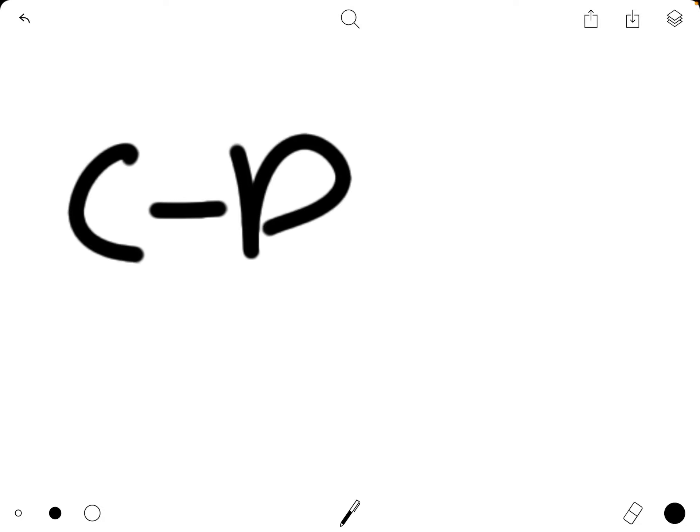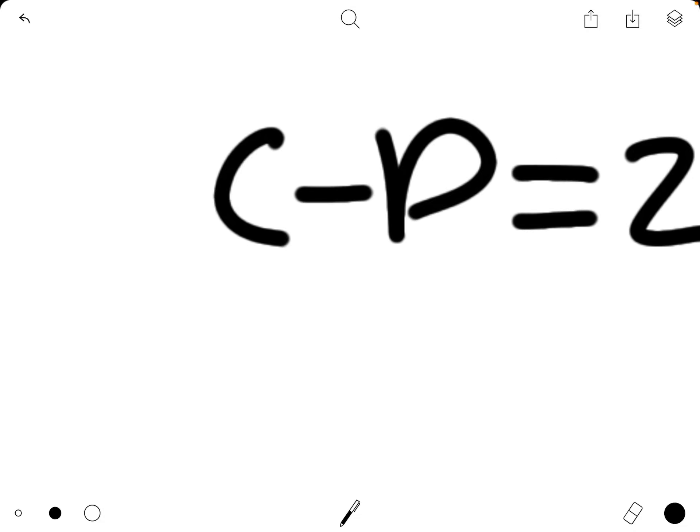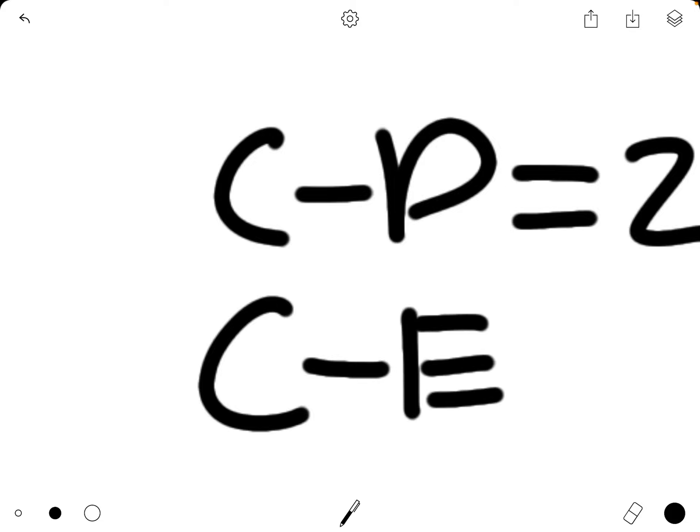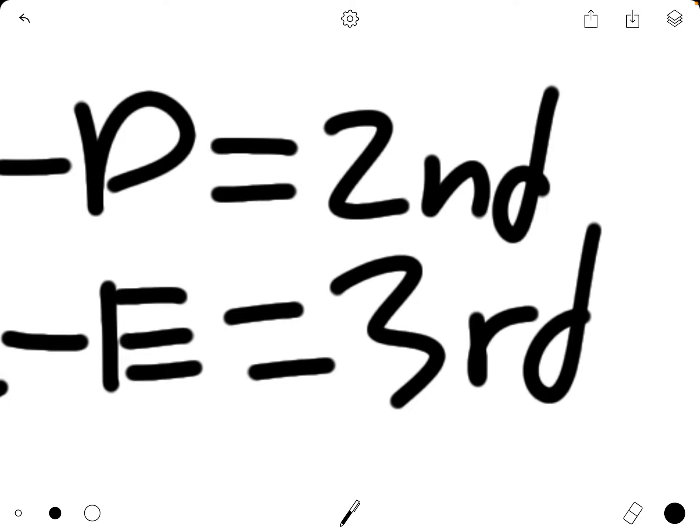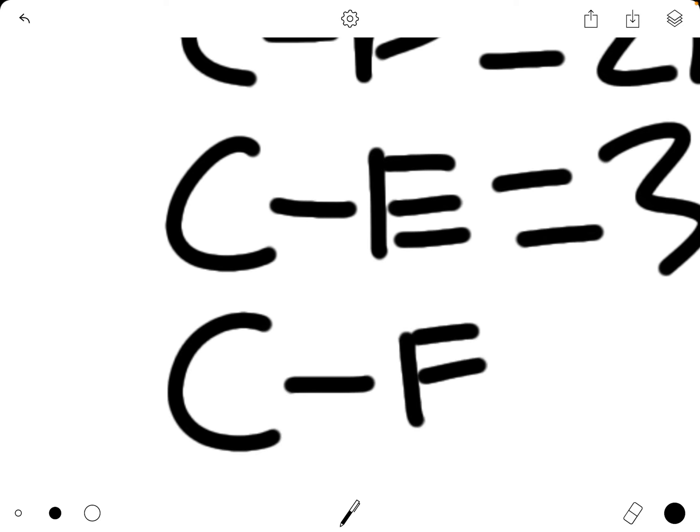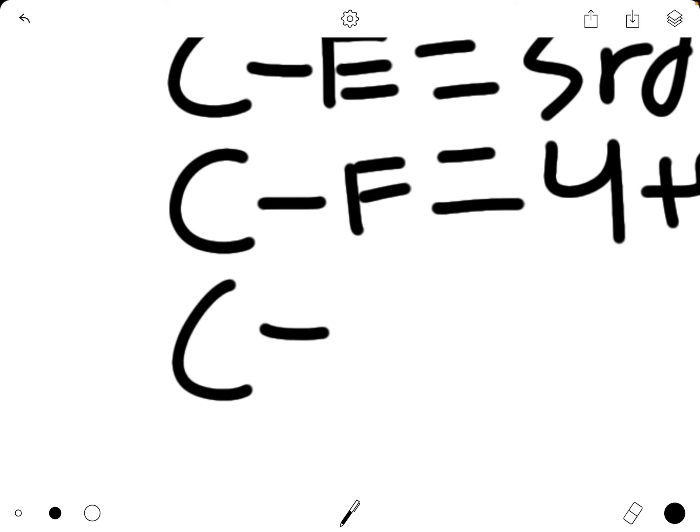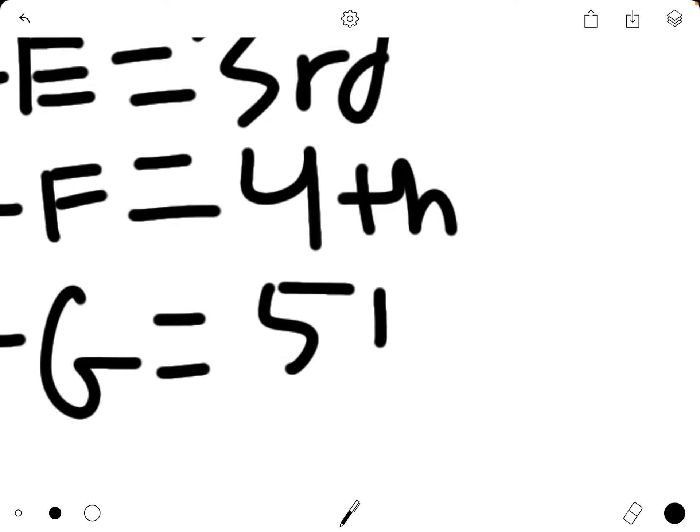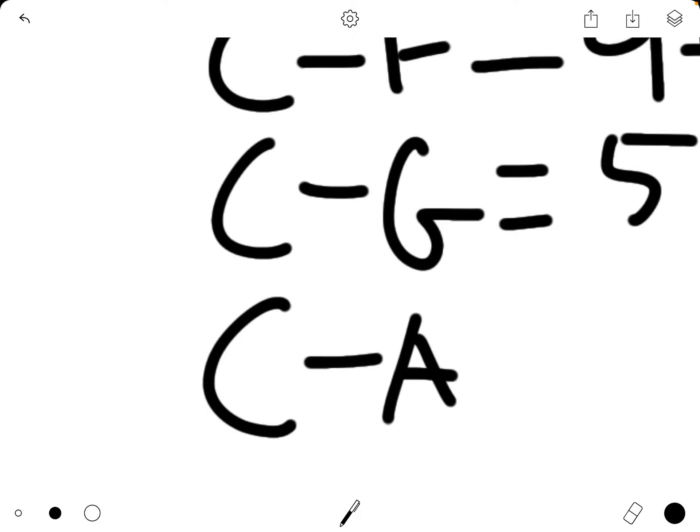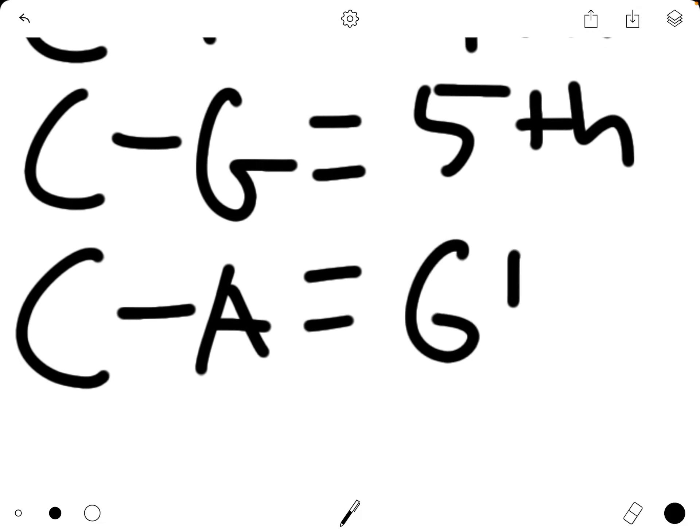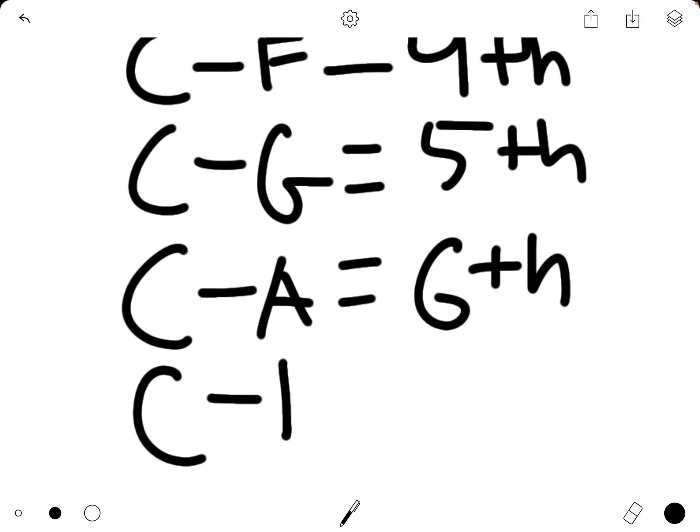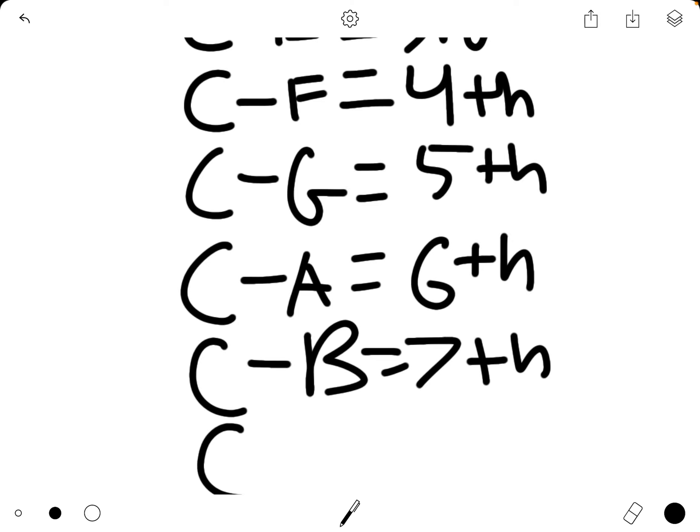So let's start off with this little grid. Please write this down after me. C to D equals second. C to E equals third. C to F equals fourth. C to G equals fifth. C to A equals sixth. C to B equals seventh.